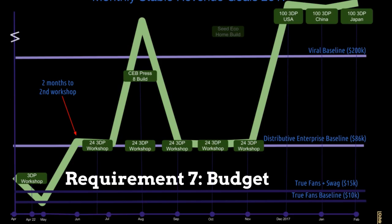This is our current budget and revenue goals based on the distributive enterprise. This is our budget plan for 2017, from April through February 2018. We have a True Fans baseline of $1,000 per month, and we're putting up a website for selling swag — stickers, published books, and other things. All these enterprise assets are open — we're opening up absolutely every economic asset to the world, taking leadership on it, because if it works for us, we'd like it to work for others.